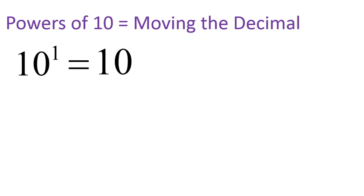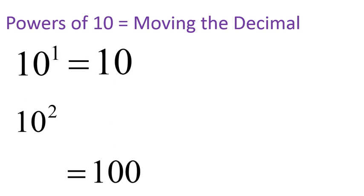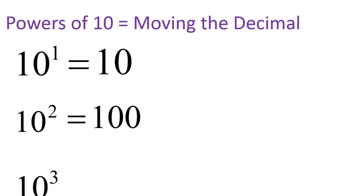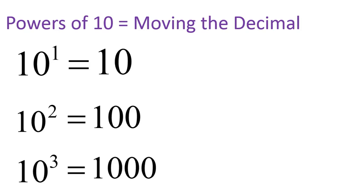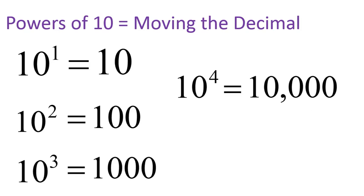So a couple of examples: 10 to the power of 1 is 10, 10 to the power of 2 is 100, 10 to the power of 3 is 1,000, 10 to the power of 4 is 10,000. Don't think about this as the number of zeros, but instead how far we move the decimal from the number 1. That will make more sense once we actually get into scientific notation.